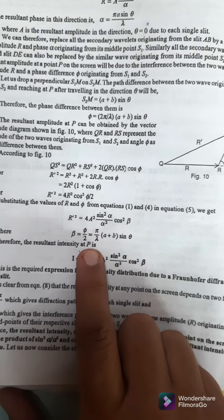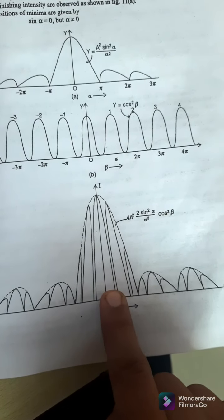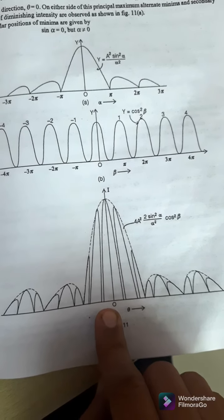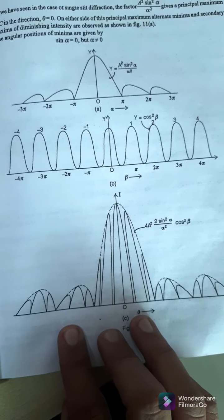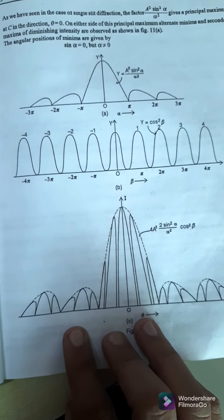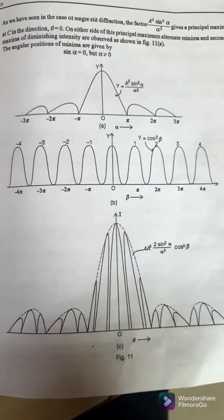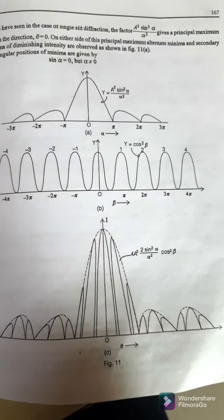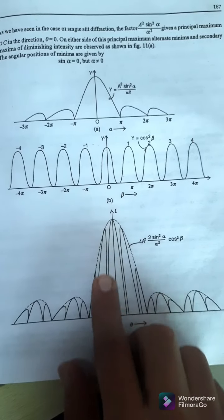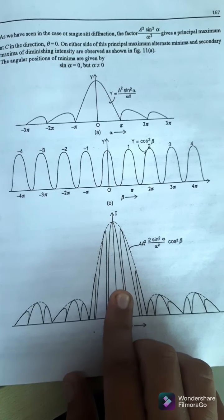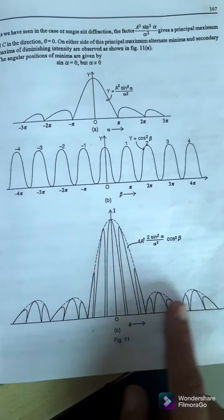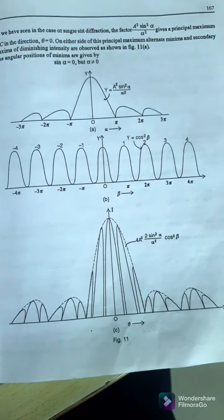If A varies while B and lambda remain constant, the intensity changes accordingly. In the second case, if A is constant and B increases while lambda is constant, the fringes will be closer and intensity will change. In the third case, if A and B are constant but lambda changes, the fringes will shift and the intensity will vary. These are the three important cases.